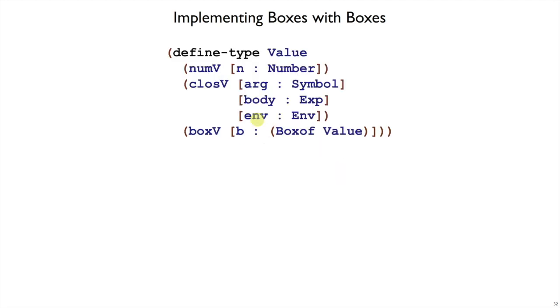So the most obvious thing to do is to represent boxes in curly using boxes in plate. So here I have my updated value data type. I've got numv and closev as before, but we have a new kind of value, box values, and a box value has inside of it a plate box.